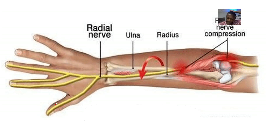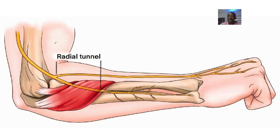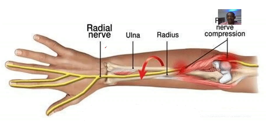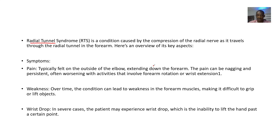One possible clinical relevance or clinical anatomy of the radial nerve is what is known as radial tunnel syndrome. Radial tunnel syndrome is simply a situation where the radial nerve is trapped in the radial tunnel. This is the condition where there is compression of the radial nerve as it travels through the radial tunnel in the forearm.